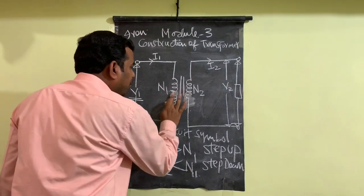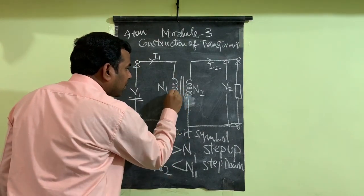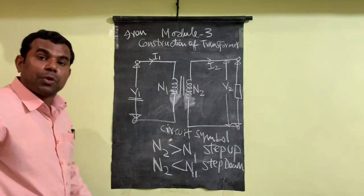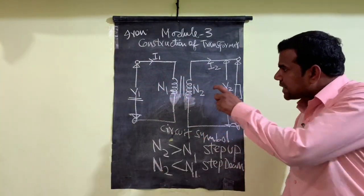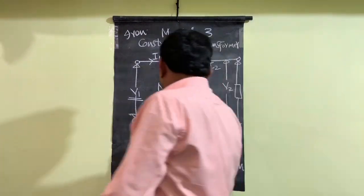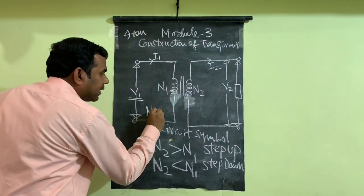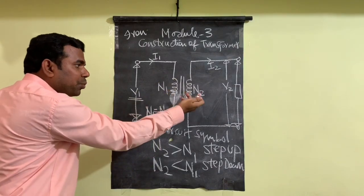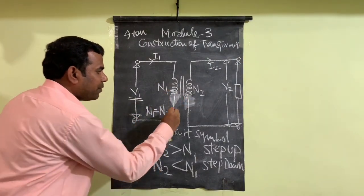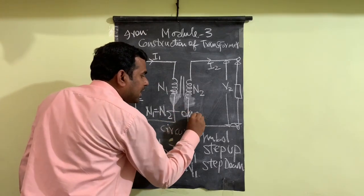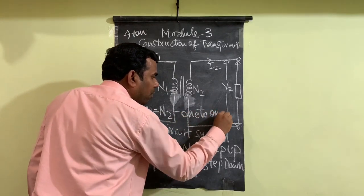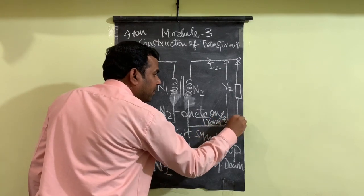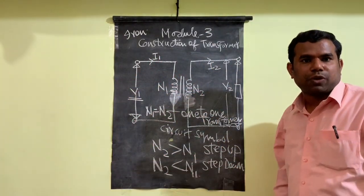Lastly, when both N1 and N2 are equal — the number of turns in the primary equals the number of turns in the secondary — this transformer is referred to as a one-to-one transformer. This concludes the construction of a transformer.